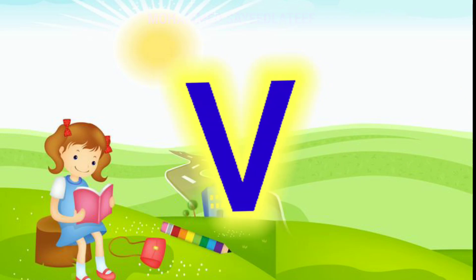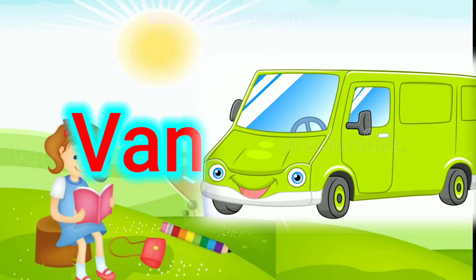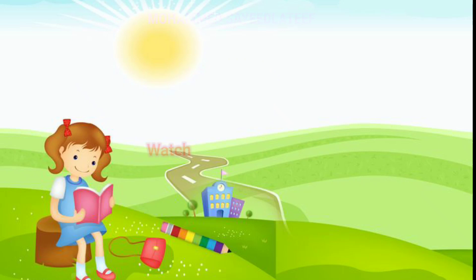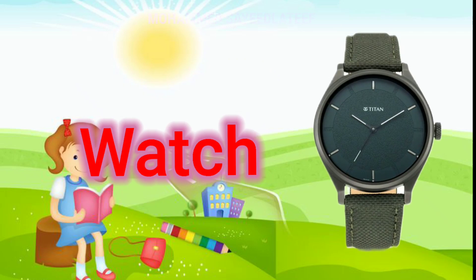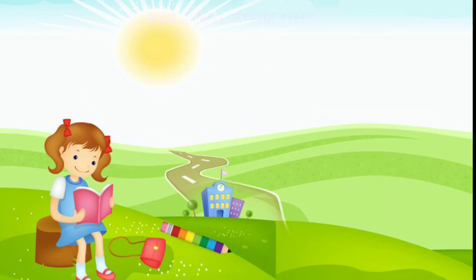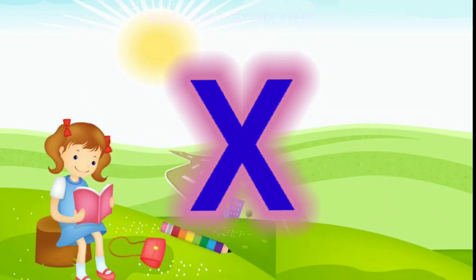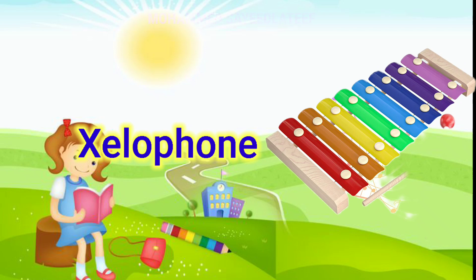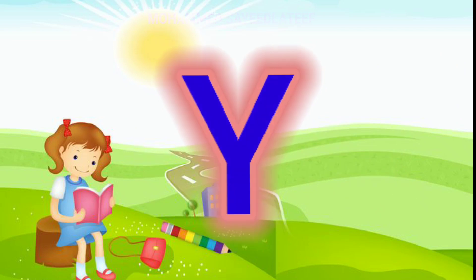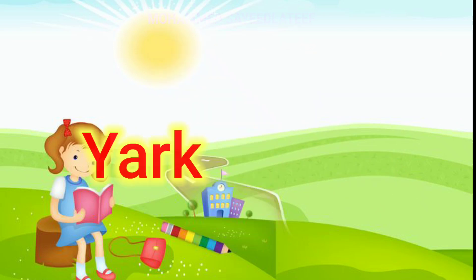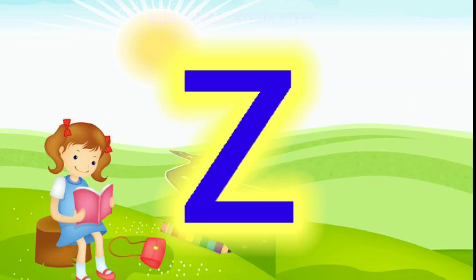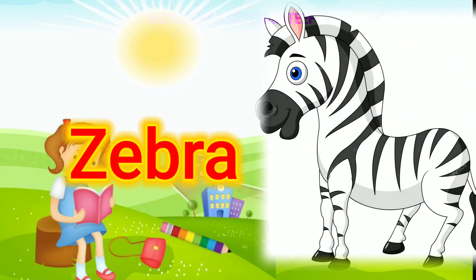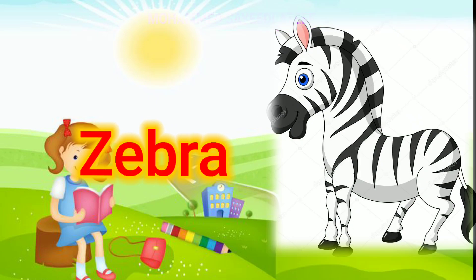U for umbrella, V for van, W for watch, X for xylophone, Y for R, Z for zebra.